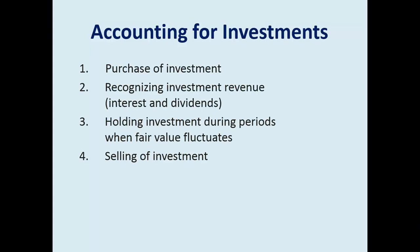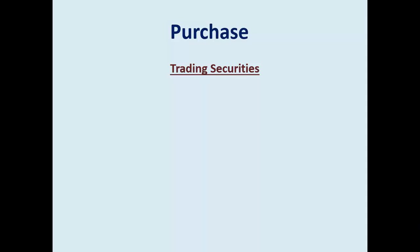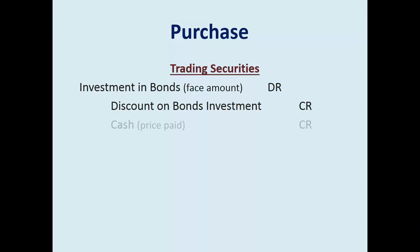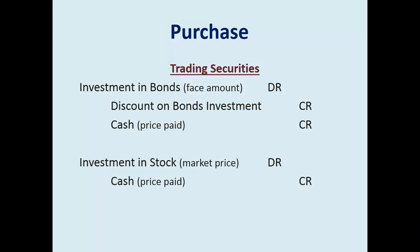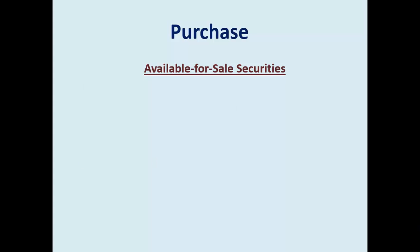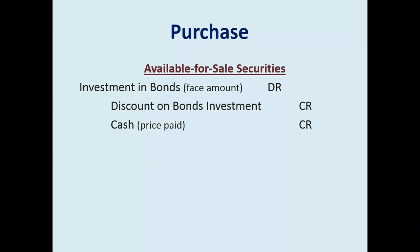There are four times when journal entries are required: the purchase, recording of revenue, fair value adjustments, and selling it. For trading, examples include an investment in bonds — usually listed with the company name — and investment in stock with the company name you've invested in. For available for sale, the purchase journal entry is identical.